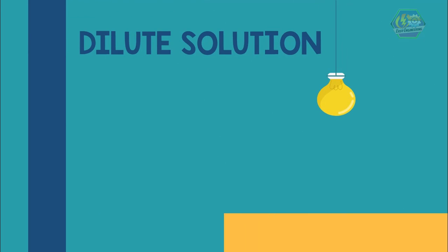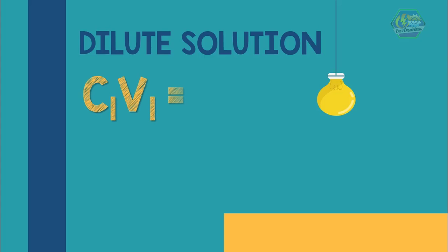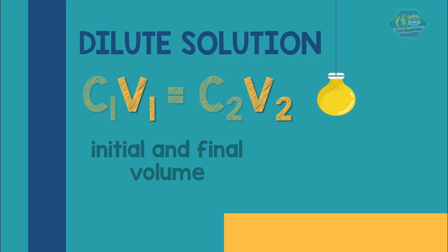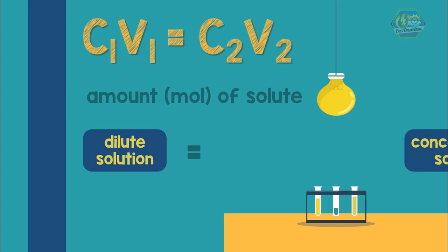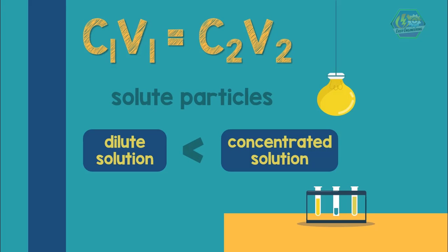In diluting a solution, a concentrated solution (higher molarity) is converted to a dilute solution (lower molarity) by adding solvent. We follow the formula C1V1 = C2V2, where C1 and C2 are the initial and final concentrations of the solution respectively, and V1 and V2 are the initial and final volumes respectively. In a dilute solution, the amount in moles of solute is the same as in the concentrated solution, but their volumes are different. The dilute solution contains fewer solute particles per unit volume and thus has a lower concentration.